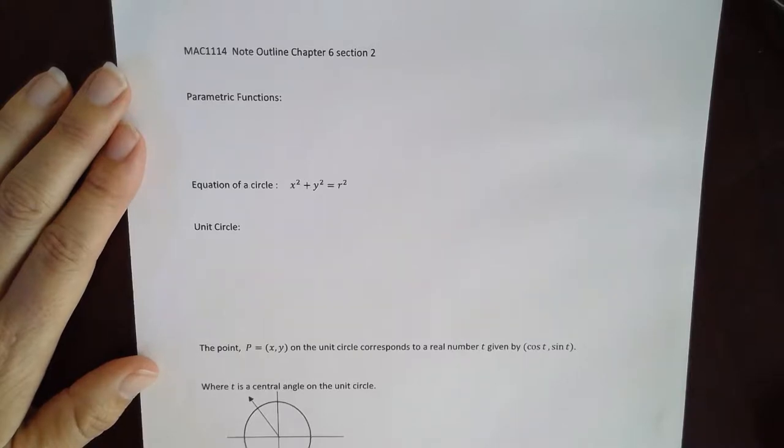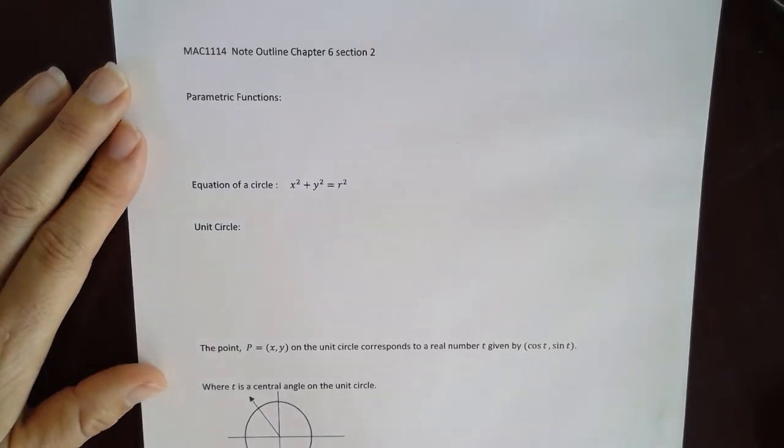Parametric functions are functions that actually have three variables, but we're putting together ordered pairs. One of the variables we're going to call a parameter, and it will determine the value of the other two variables. So the one that decides the value of the other two, that one's called the parameter.